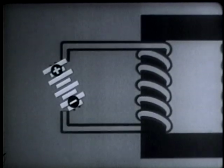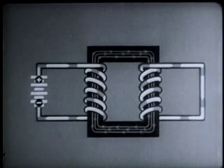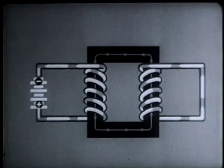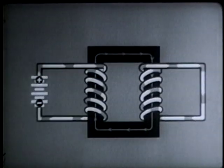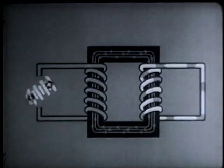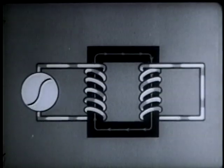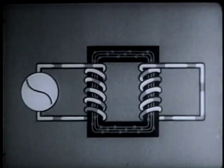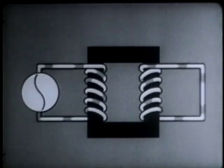Now let's consider alternating current. We'll first give you an idea of how it works by sending direct current through the coil, first in one direction, then in the other. Notice that the induced current in the second winding reverses each time the supply current is reversed. By replacing the battery with an AC generator, we get a true alternating current, which is reproduced almost exactly in the second winding. Here's the second important fact about a repeating coil: it repeats alternating current practically unchanged.